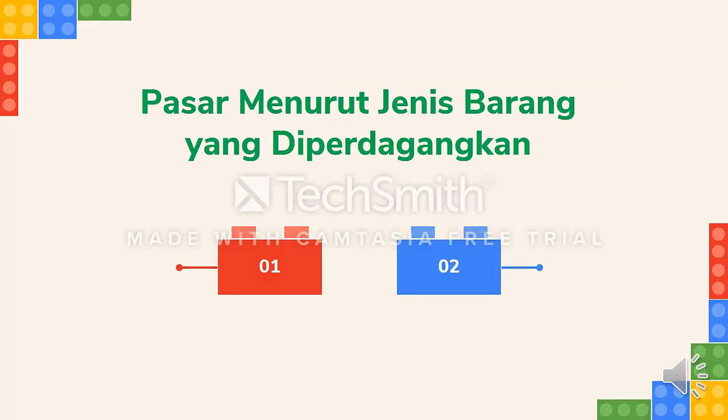Pasar menurut jenis barang yang diperdagangkan. Pertama adalah pasar barang konsumsi, yaitu pasar yang memperjualbelikan barang-barang keperluan sehari-hari. Contohnya pasar ikan, pasar buah-buahan, supermarket, atau mall.